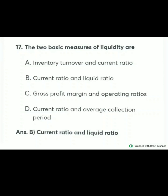The two basic measures of liquidity are current ratio and liquid ratio. One more is the absolute liquid ratio. Inventory turnover is an activity ratio, not a liquidity ratio. Gross profit margin ratio is a profitability ratio. Average collection period is related to the debtor's turnover ratio. So only option B — current ratio and liquid ratio — measures the liquidity of the company.